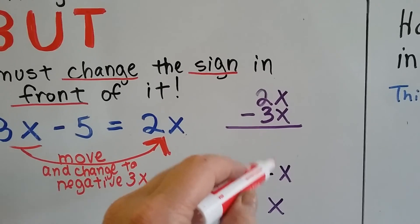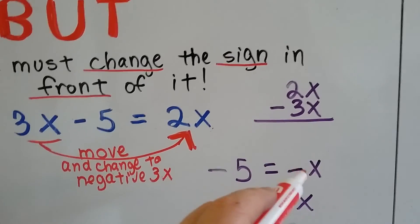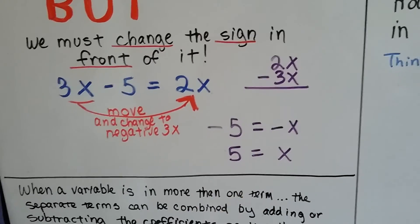You know, we don't write that invisible one in front of it. It normally would have been a negative 1x, right? So now we just have negative x. So we've got negative 5 equals negative x, which is the same thing as 5 equals x.